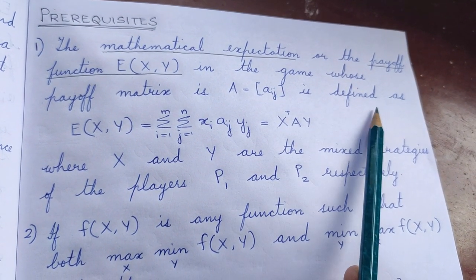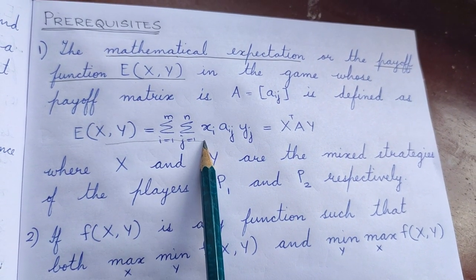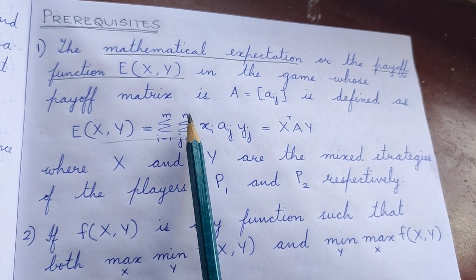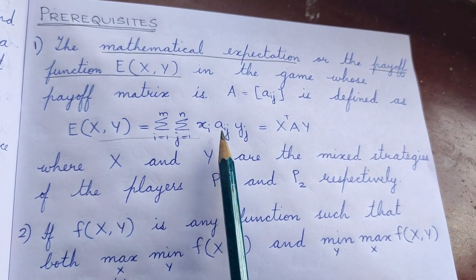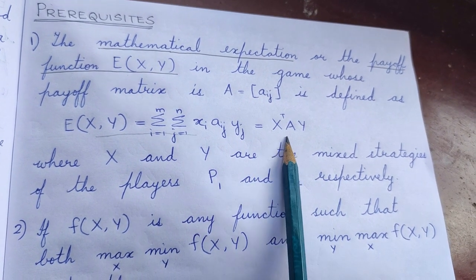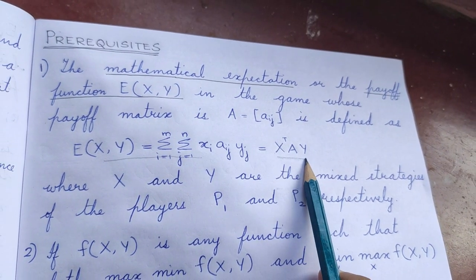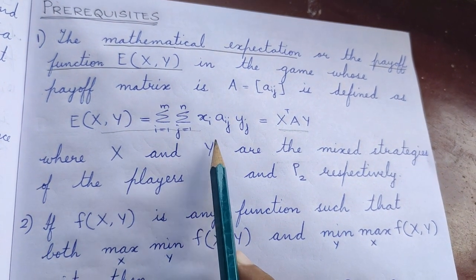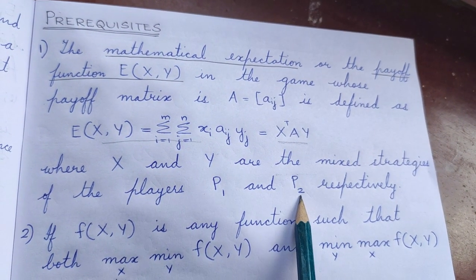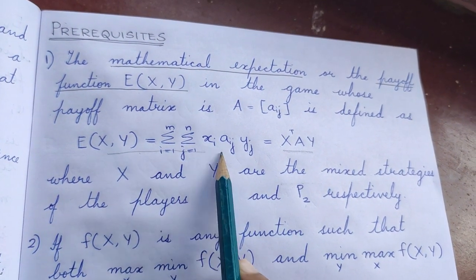E of xy is defined as the summation over i equal to 1 to m, summation over j equal to 1 to n, xi into aij into yj, which can be written in matrix form as x transpose into Ay, where x and y are the mixed strategies of the players P1 and P2 respectively. This is how mathematical expectation E of xy is defined.